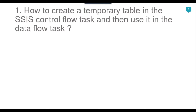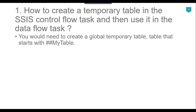Normally if you create a temp table in the control flow task and then try to use it in the data flow task, the SSIS package will fail. There are few things you need to take care of while using temporary tables inside the SSIS package. The first thing is that you need to use the global temporary table, not the local temporary table. The global temporary table starts with double hash before the table name.